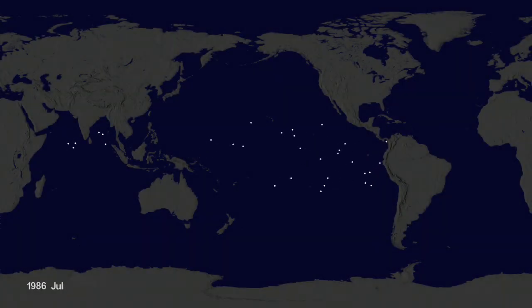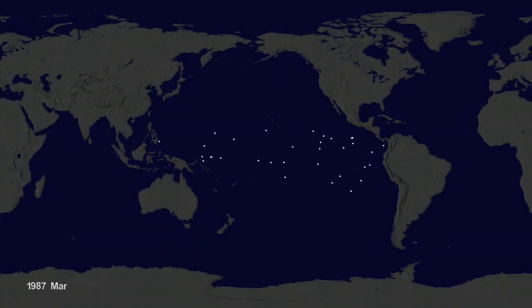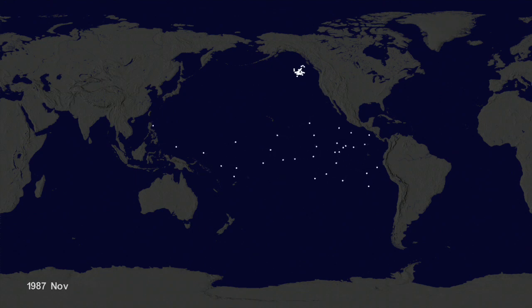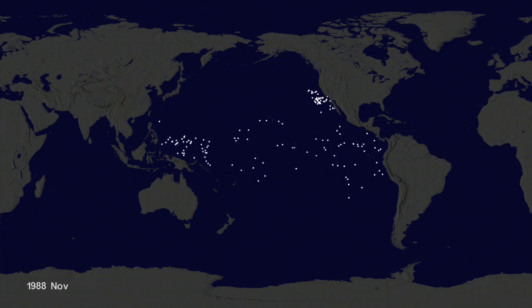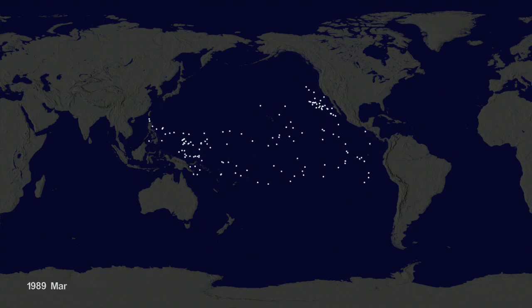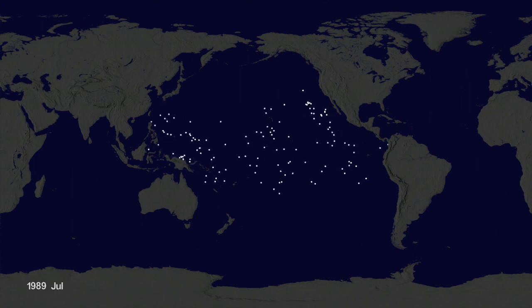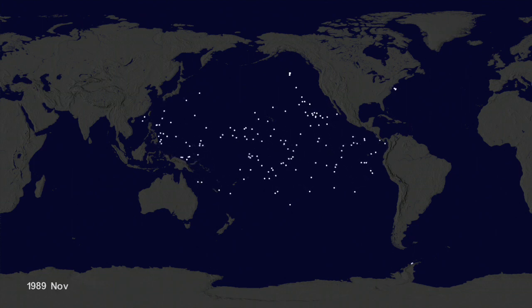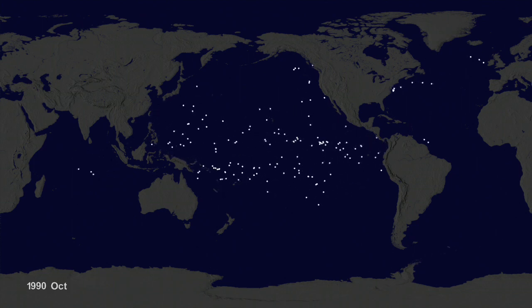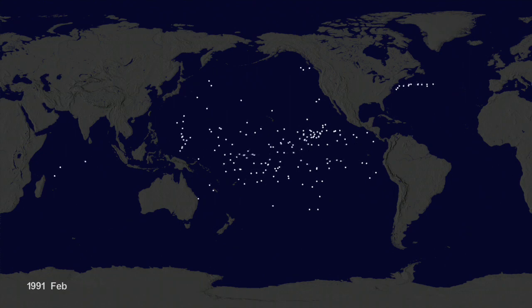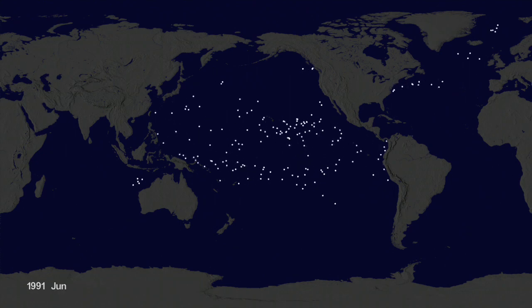Hey, it's Greg Shira from NASA's Scientific Visualization Studio. We wanted to see if we could visualize the so-called ocean garbage patches. We start with data from floating scientific buoys that NOAA has been distributing in the oceans for the last 35 years, represented here as white dots.